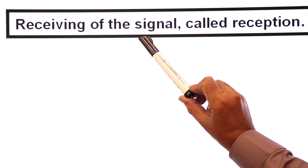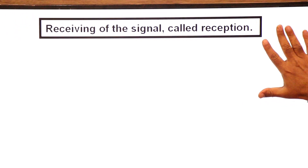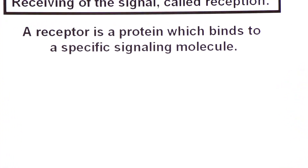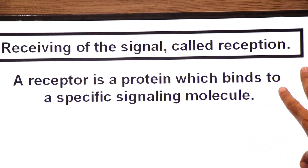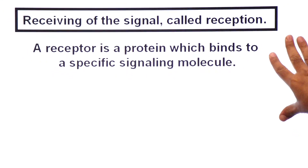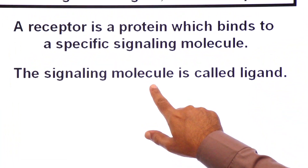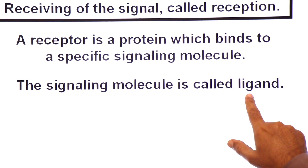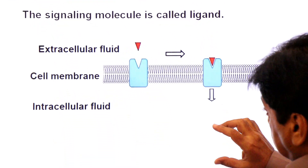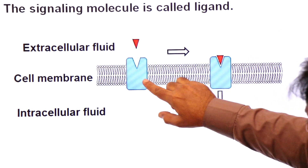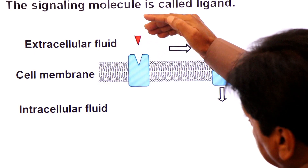Another function is reception — the receiving of a signal. Some integral proteins are receptor proteins. A receptor is a protein which binds to a specific signaling molecule. The signaling molecule in chemistry or biology is called a ligand.